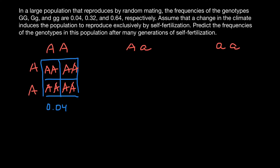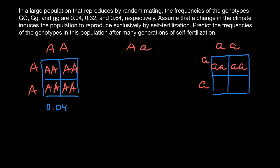The same picture applies to the homozygous recessive genotype. If we cross homozygous recessive with itself — self-fertilize or self-pollinate in plants — we always get 100% the same genotype in the progeny. Starting with a frequency of 0.64, 100% of the progeny is going to be the same genotype, so the frequency stays at 0.64.